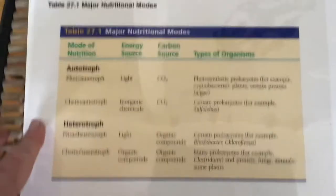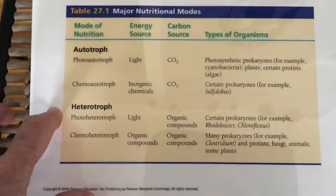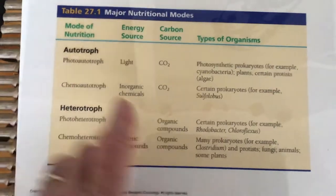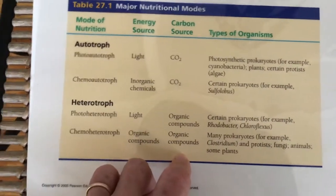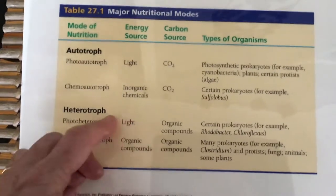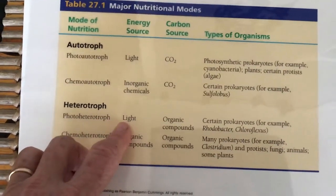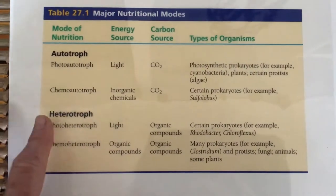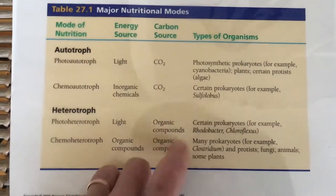Heterotrophs are things that use organic compounds as their main energy or carbon source and they can either be photosynthetic or not photosynthetic. If they're photosynthetic they use light but they break down organic compounds as their carbon source.